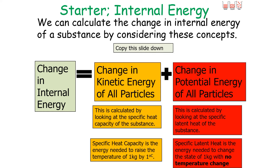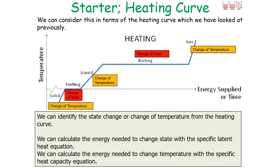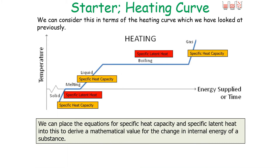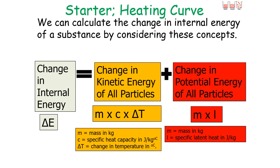Specific heat capacity is the energy needed to raise the temperature of 1 kilogram by 1 degree Celsius, while specific latent heat is the energy needed to change the state of 1 kilogram with no temperature change. We can identify these particular points on heating curves — either you have a change of temperature, meaning a change in the kinetic energy store, or a change of state, meaning a change in the potential energy store.